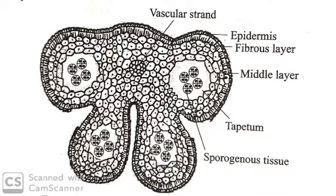The sporogenous tissue lies within the tapetum layer. The sporogenous cells directly function as pollen mother cells. The pollen mother cells undergo meiosis to produce pollen tetrads. The microspore or pollen grain is surrounded by the anther wall, namely the middle layer, endothesium, and epidermis.